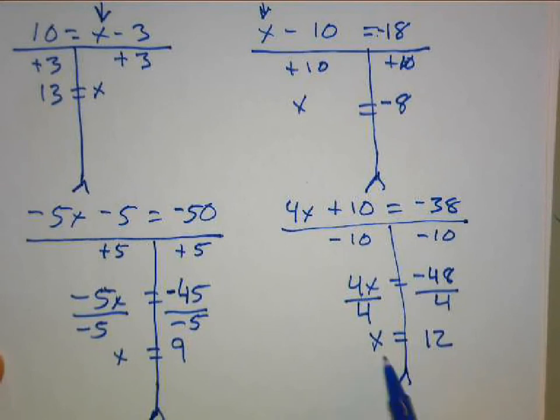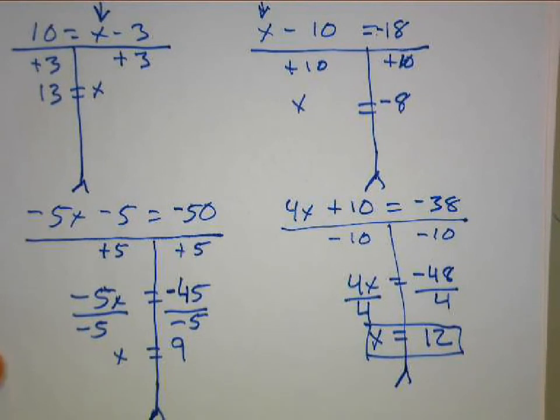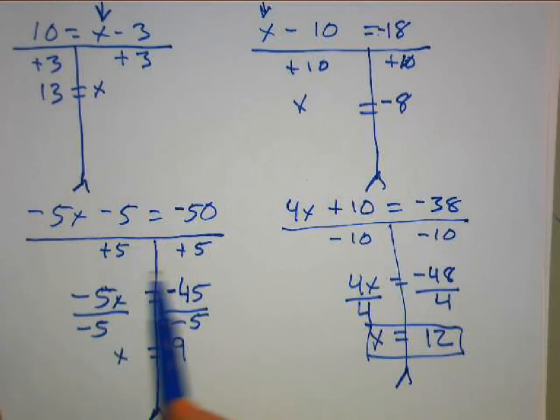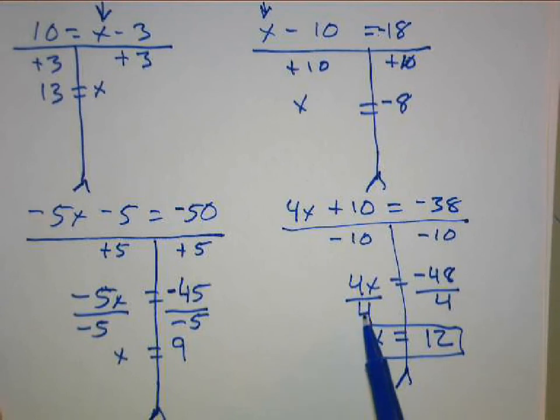And that's our first two problems. The first things we need to remember is we want to isolate the variable, and then we want to maintain balance by doing the same thing on both sides of the equation.